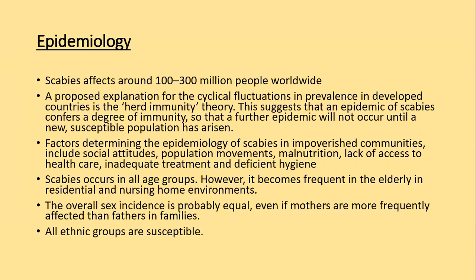A proposed explanation for cyclic fluctuation in prevalence in developed countries is the herd immunity theory: it suggests that an epidemic of scabies confers a degree of immunity so that a further epidemic will not occur until a new susceptible population has arisen. Factors determining epidemiology of scabies in impoverished communities include social attitude, population movement, malnutrition, lack of access to healthcare, inadequate treatment, and deficient hygiene. Scabies occurs in all age groups but is frequently seen in the elderly in residential care and nursing homes. Overall sex incidence is equal, but mothers are frequently affected more than fathers within a family.